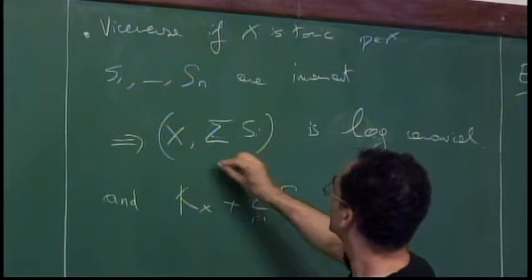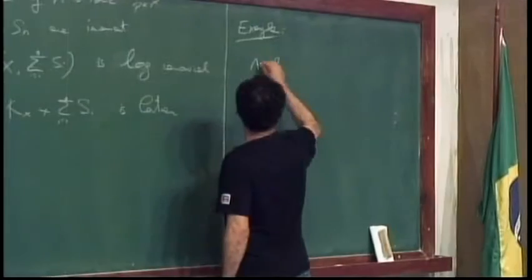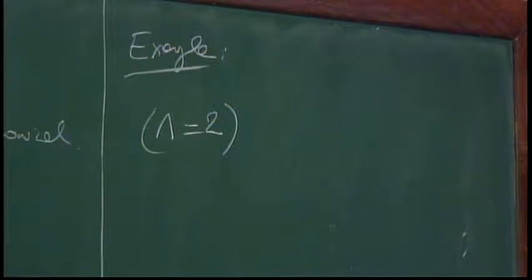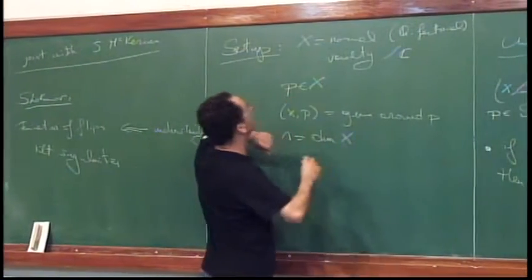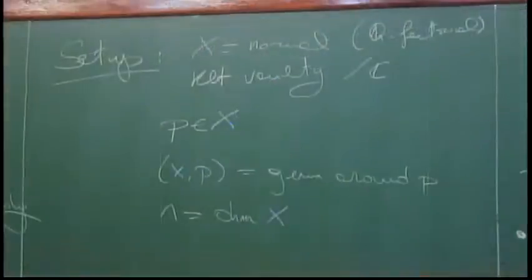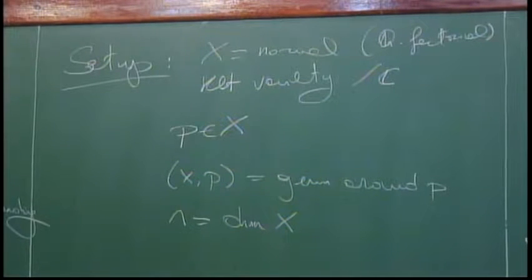Let's talk about surfaces. Surfaces are easy but hide many of these properties. Although we take pairs, my variety X will always be KLT — normal and KLT without a boundary. I'll always assume X is KLT even if I forget to write it. So what does it mean to be KLT? There is a very easy characterization of KLT surfaces: analytically, they are quotient singularities. Everyone knows there are three families: ADE, corresponding to the diagram of the exceptional locus of the minimal resolution.